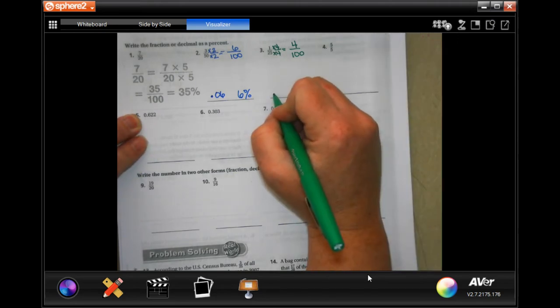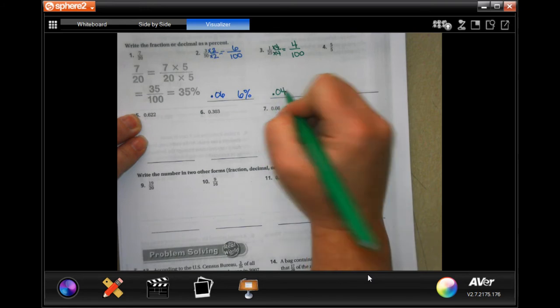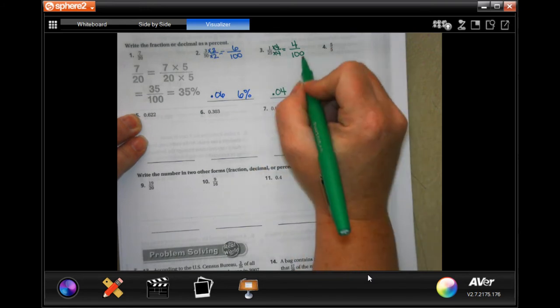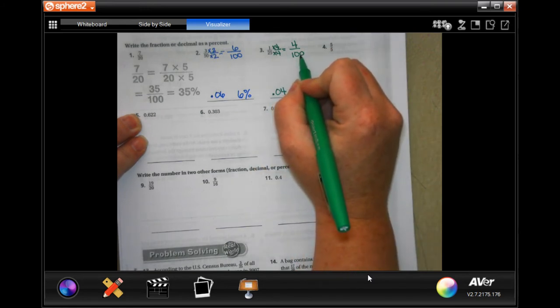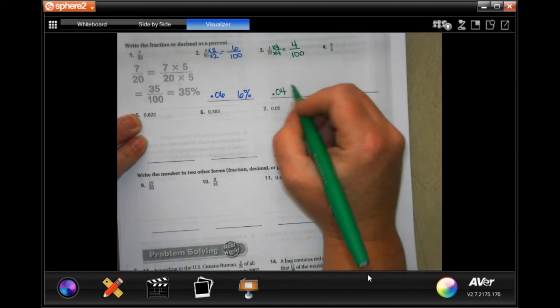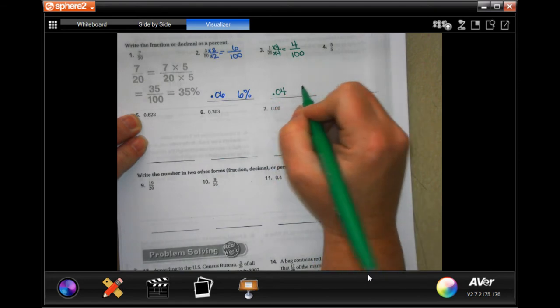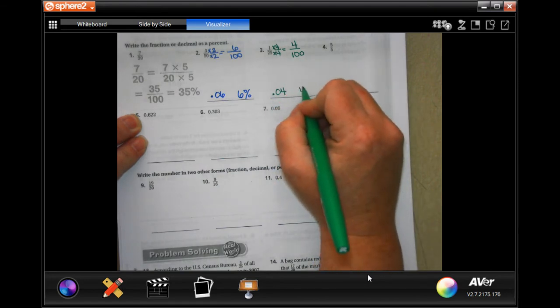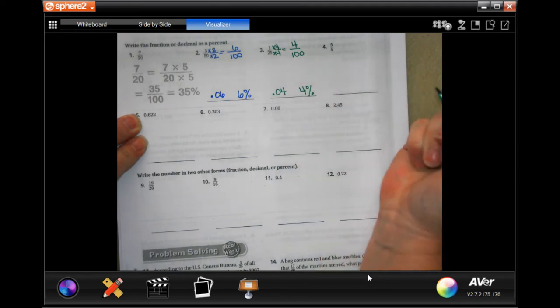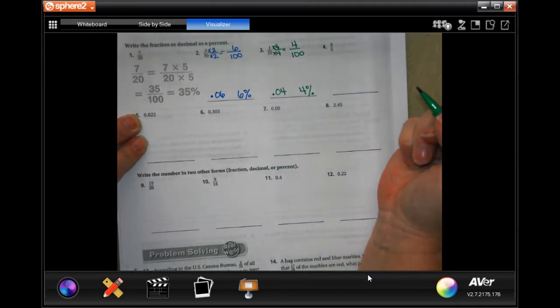Now, as a decimal, you would have to put a 0 first, because this ends in the 100th spot. Over 100 means 100th. Or, your percent would be 4%.